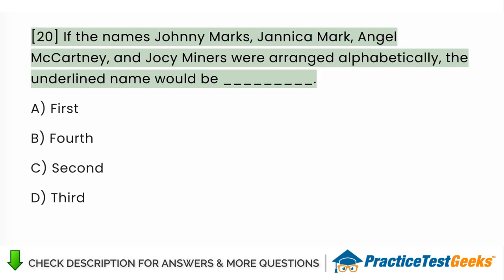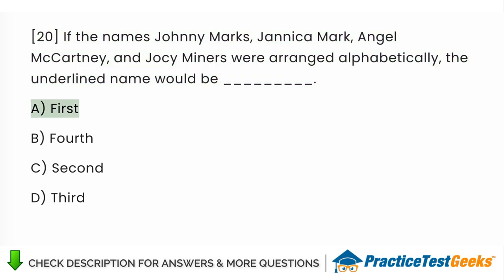If the names Johnny Marks, Janica Mark, Angel McCartney, and Jockey Miners were arranged alphabetically, the underlined name would be A. First B. Fourth C. Second D. Third